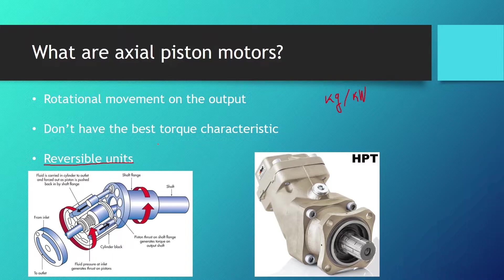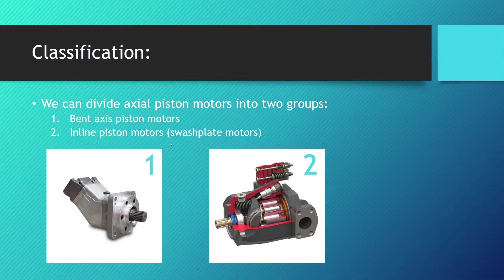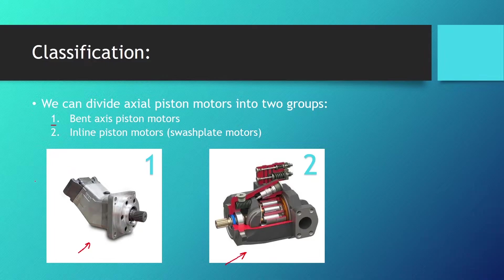We can divide axial piston motors into two groups. Group number one is the bent axis piston motors which we can see in this picture right here, and inline piston motors or swash plate motors which we can see right here. The bent axis piston motors can be with an adjustable angle so we can have a variable displacement motor, and they can be with a fixed angle.